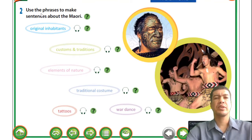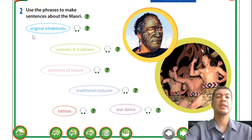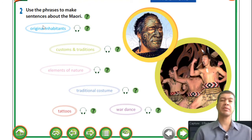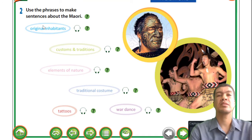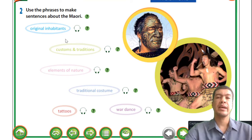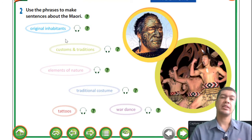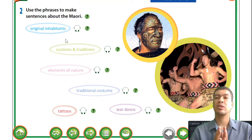Alright, use the phrases to make sentences about the Maori - the people in New Zealand. First of all we have the phrase 'original inhabitants.' Before we can make sentences we need to understand what these words mean. Original inhabitants are the people that occupied the land - they were the first people to occupy the land. So if teacher occupies land X, then teacher is one of the first inhabitants of land X.